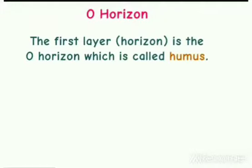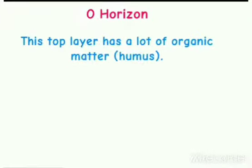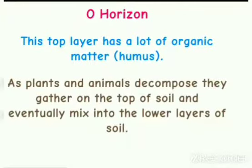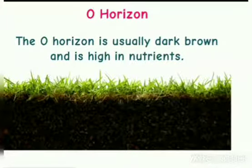O horizon. The first layer is called the O horizon, which is called humus. Humus is decomposed plant and animal matter. This top layer has a lot of organic matter. As plants and animals decompose, they gather on the top of the soil and eventually mix into the lower layer of the soil.